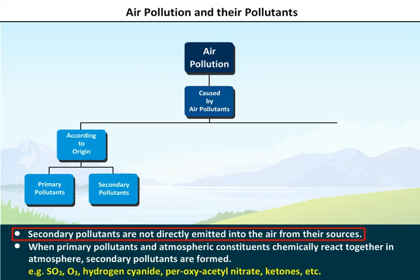Secondary pollutants are not directly emitted into the air from their sources. They are formed when primary pollutants and atmospheric constituents chemically react together in the atmosphere. Examples of secondary pollutants include SO₃, O₃, hydrogen cyanide, peroxyacetyl nitrate, and ketones.